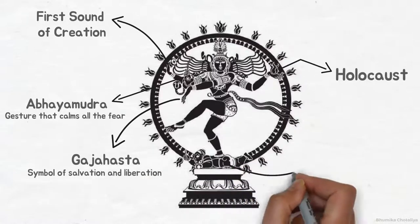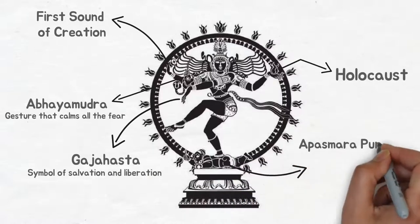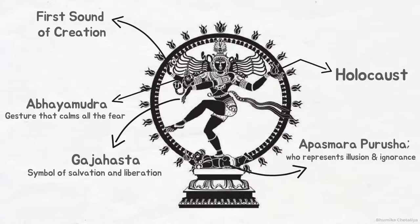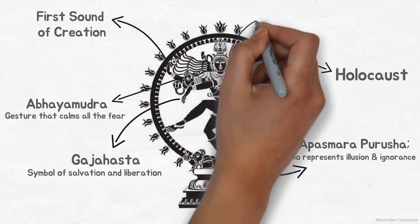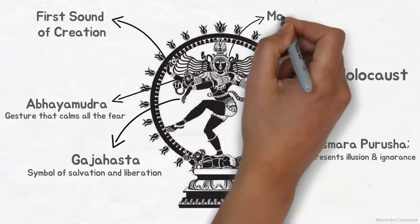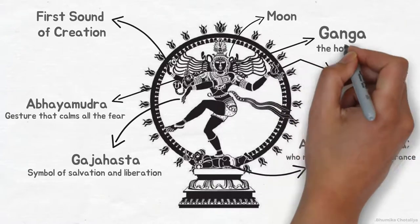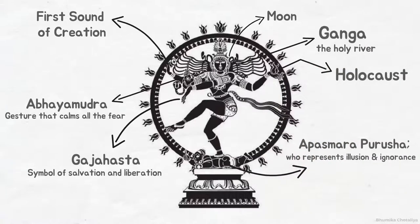And the left hand makes the gesture of Gajahasta, the symbol of salvation and liberation. His right foot stamps on the dwarf figure, a Apasmara Purusha, who represents illusion, ignorance and leading humanity away from the truth. The matted hair spreads during the dance, from which his energy and wildness disperse. His locks contain a skull, the dhatura blossoms, and a crescent moon depicting that Shiva, though he is invisible, is always present. Ganga, the holy river, resides in his hair, which also signifies creation and destruction.